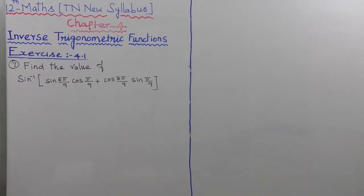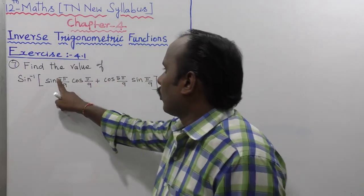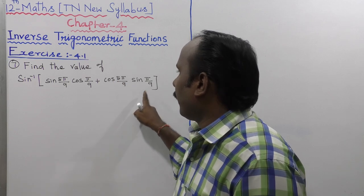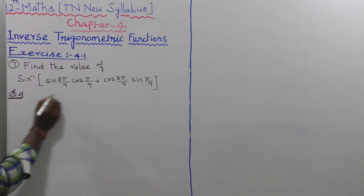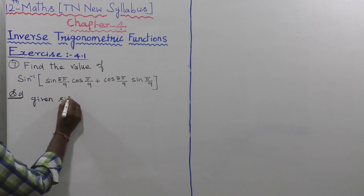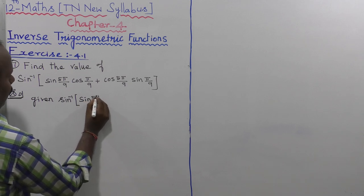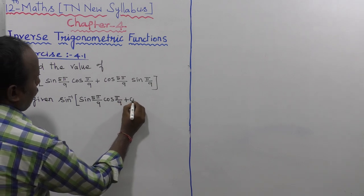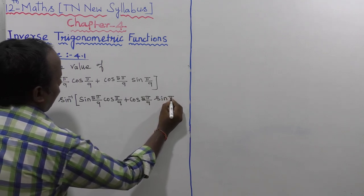The given value to find is sin inverse of sin(5π/9)cos(5π/9) plus cos(5π/9)sin(5π/9).